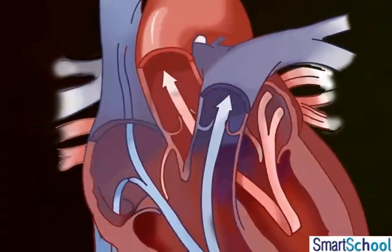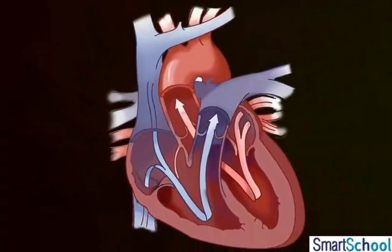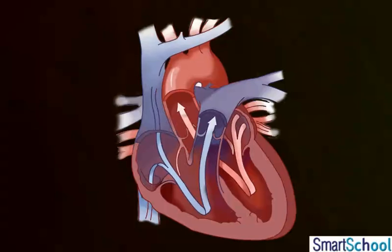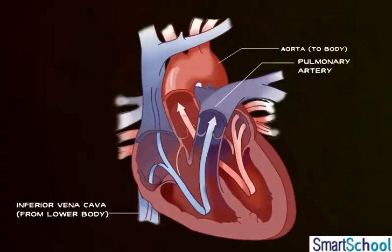Many blood vessels originate from the heart, the important ones being the aorta, pulmonary artery, the superior vena cava, and the inferior vena cava.